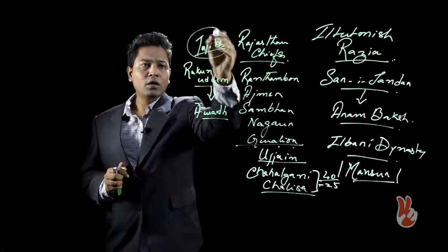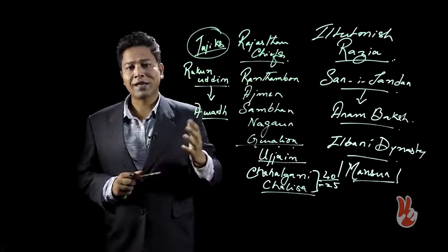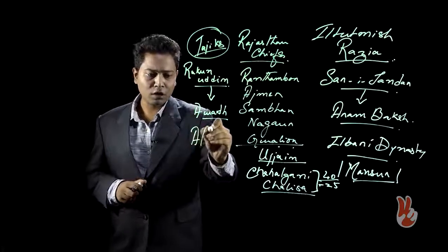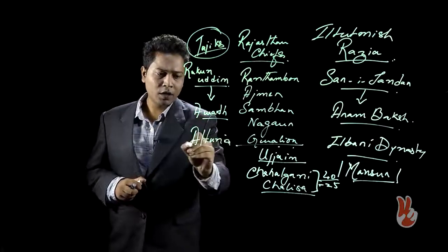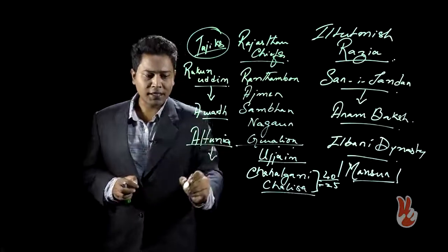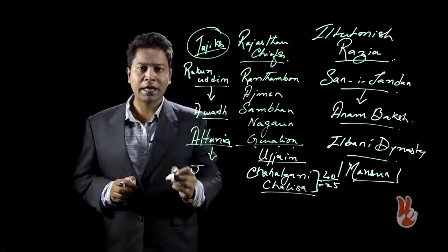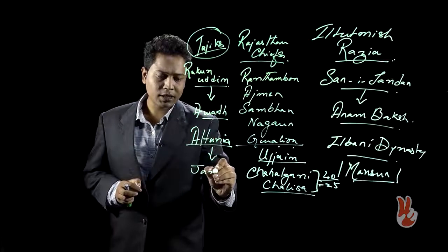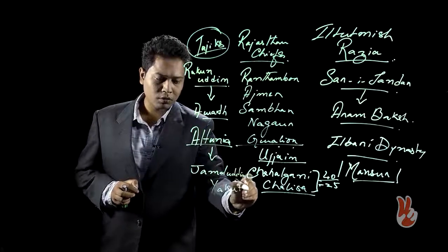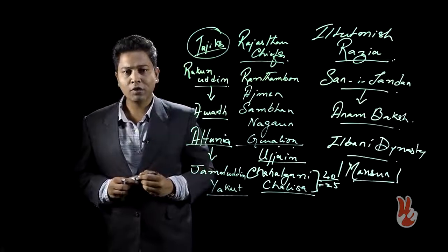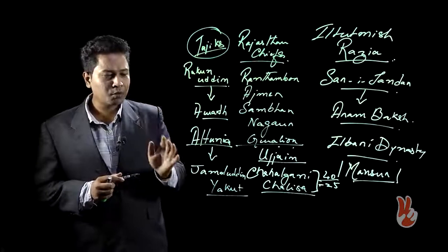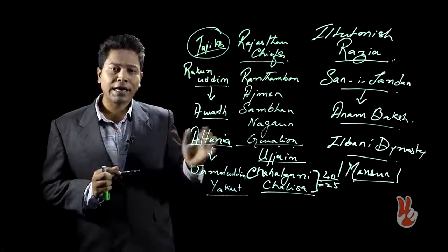After she became the Sultana, as I already talked about, she started favoring the Tajiks. And it was to the chagrin of the Turks. Therefore, she is captured by a leading Turk called Altuniya. Altuniya also succeeds in killing one of the important Tajiks that was raised to a very high position, that is Jamaluddin Yakut.